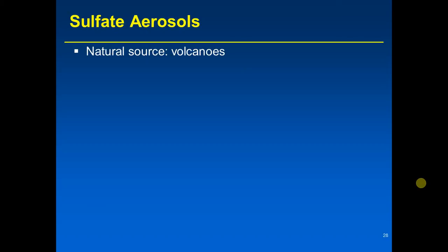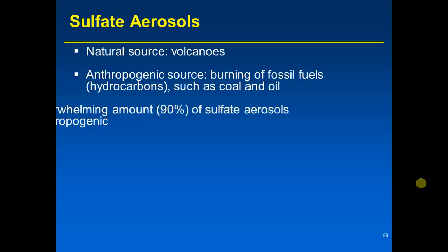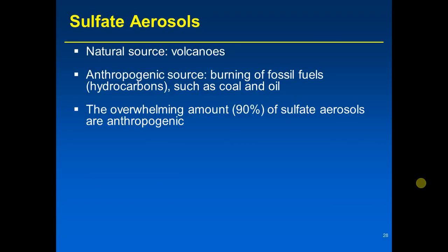An anthropogenic source is the burning of fossil fuels, such as coal and oil. Fossil fuels are hydrocarbons. When you burn coal to make power, or when you burn a product made from oil for transportation energy, that puts sulfate into the atmosphere. The overwhelming amount of sulfate aerosols — about 90% — are anthropogenic. So there has been a great increase in the amount of sulfate aerosols in the atmosphere because of humans.